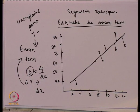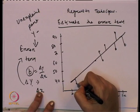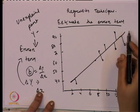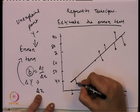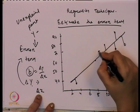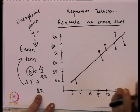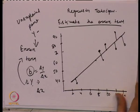The error term refers to the deviation of the plotted points from the straight line drawn through the center of the plotted points — that is why we call it the regression line. The error term is basically the deviation between the actual data point and this line. For each actual data point above or below the regression line, the deviation is the error term.